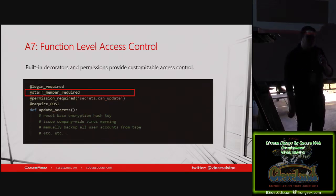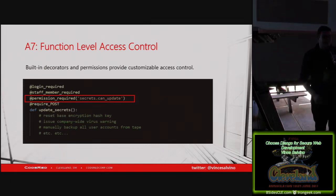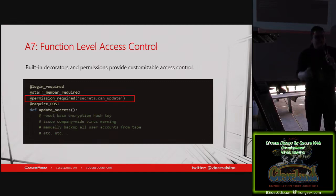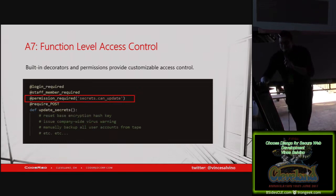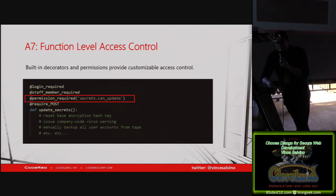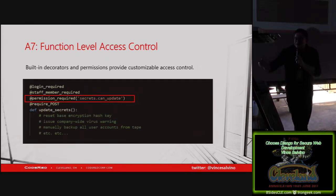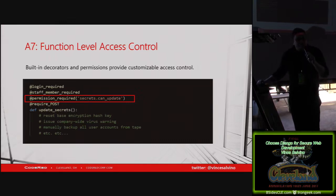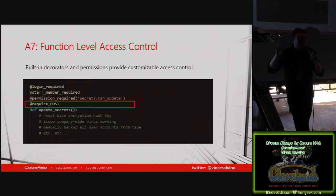Another one is staff_member_required. Not only do you have to be logged in, but you have to be a superuser, essentially. Then there's permission_required, which is actually really robust because Django comes with its own entire permission system. Everything in your database at the table level, you can specify which user or group should have access — read access, write access, create but not edit, etc. So with permission_required you can say, for example, secrets.canUpdate, meaning that user not only has to be logged in and be a staff member, but they also have to have the canUpdate permission, or else it won't let them hit that function.